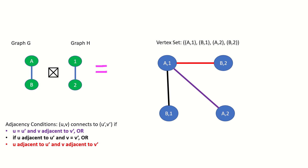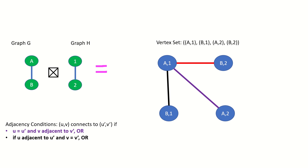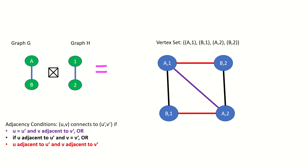Now let's look at vertex A2. According to the first adjacency condition, vertex A2 will connect to vertex A1, as their left entries match and right entries — vertex 2 and vertex 1 — are adjacent in graph H. We already have this connection, so we can move on. According to the second adjacency condition, vertex A2 will connect to vertex B2, as their right entries are the same vertex in graph H and their left entries are adjacent in graph G. According to the third adjacency condition, vertex A2 will connect to vertex B1, as their left entries are adjacent in graph G and their right entries are adjacent in graph H.